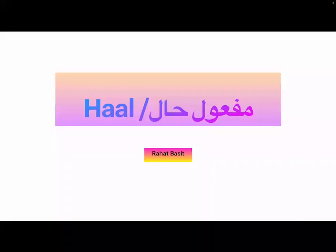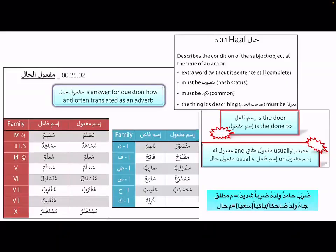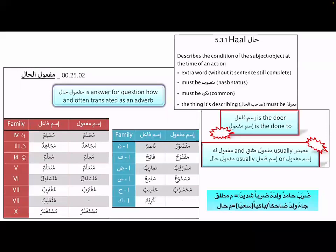Today our topic is Maf'oulul Hal. We know that in a jumlah fa'iliyya we have a fa'il and maf'oul. There are many different kinds of maf'oul, and one of them is Maf'oulul Hal. Maf'oulul Hal basically gives the answer of 'how.' This is similar to Maf'oul Mutlak and Maf'oul Li Ajlihi — Maf'oul Li Ajlihi gives the answer of 'why,' while Maf'oul Mutlak also gives the answer of 'how.'